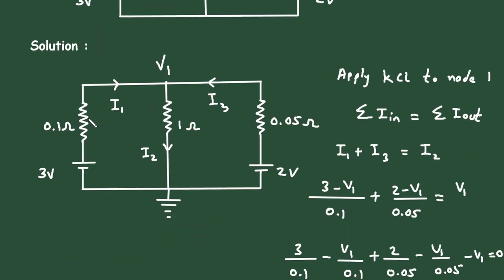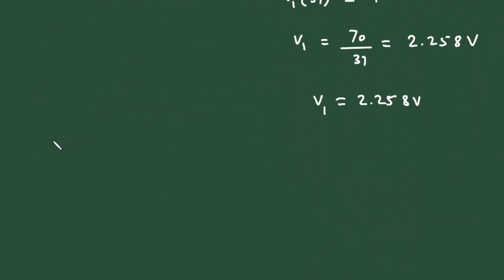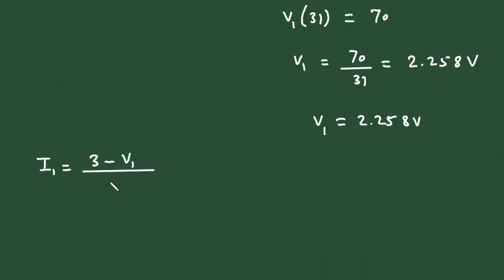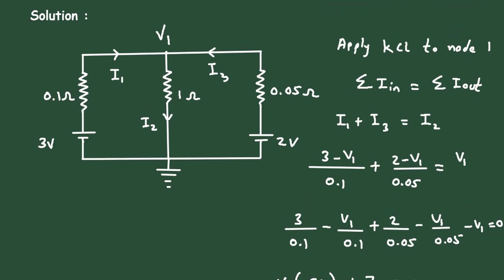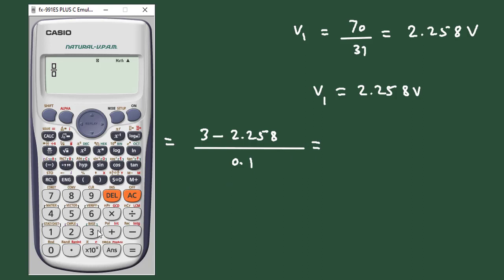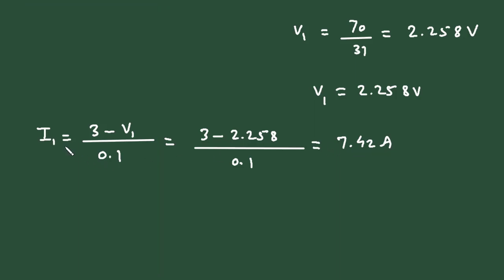Now we have to find the currents through each branch: I1, I2, and I3. So I1 equals (3 minus V1) divided by 0.1, which is (3 minus 2.258) divided by 0.1. This gives 7.42 amperes.